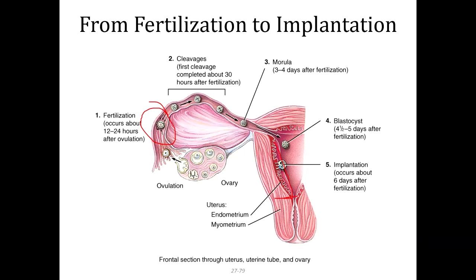If everything goes normally, that cell begins to divide through mitosis — two cells, four cells — until you reach what we call the morula, about three to four days after fertilization, where you have about 16 to 32 cells. Each of those cells has 46 chromosomes. Implantation usually occurs around six days after fertilization. It doesn't always occur — there have to be hormones produced correctly and nutrients in the uterine lining for that to happen.